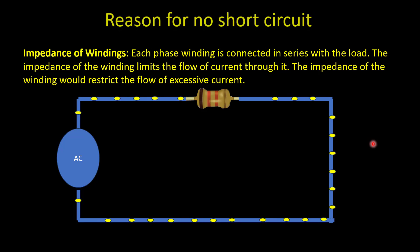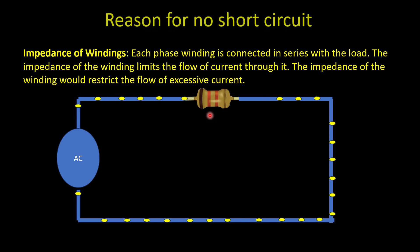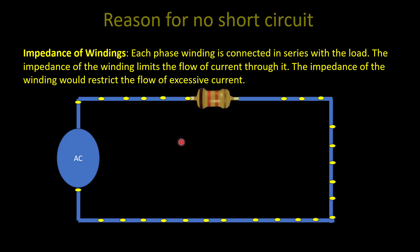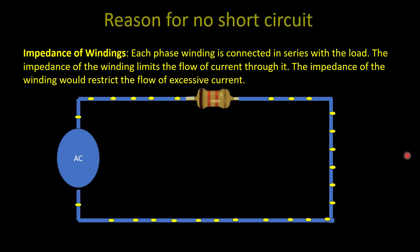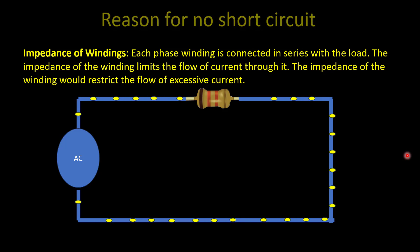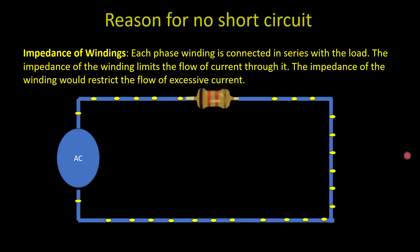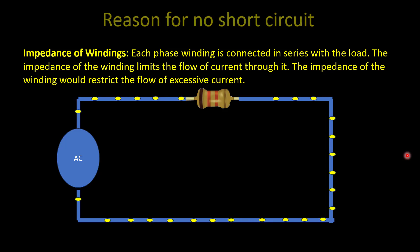The third reason is impedance of the winding. If you look at this picture, you can see a supply connected through a resistor. In this scenario, will there be a short circuit? No, because the supply is connected through a resistor. Short circuit happens without resistance or zero resistance. If we remove this resistor, yes, there will be a short circuit and excessive current will flow. We all know transformer windings are in the form of a coil, so their resistance is very negligible, but they have reactance or impedance. This impedance of the winding limits and restricts the flow of excessive current.